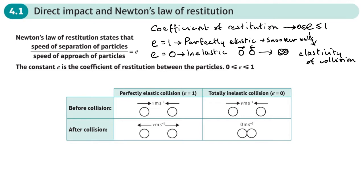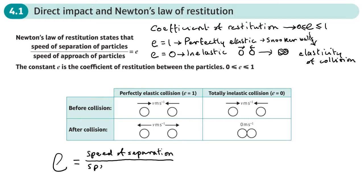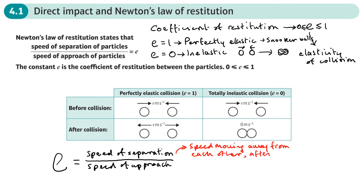So how is the coefficient of restitution worked out? e depends on the type of particles involved in the collision. It's measured as the speed of separation divided by the speed of approach. The speed of separation is the speed they are moving away from each other after the collision.